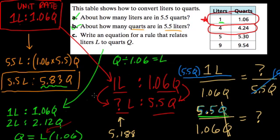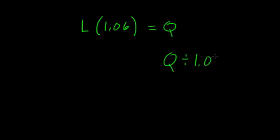That's because these two equations are inverses of each other. If I clear this off, you can see it. Liters times 1.06 equals quarts. Well, therefore, quarts divided by 1.06, the reverse of that, equals liters.